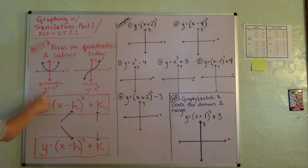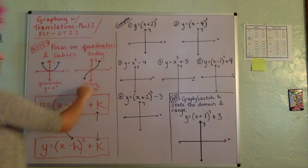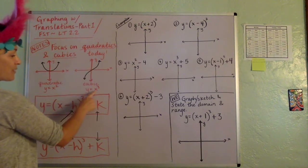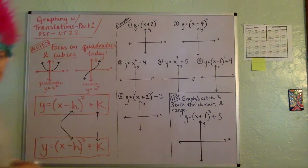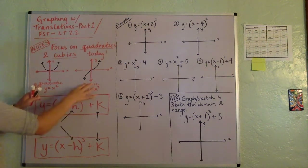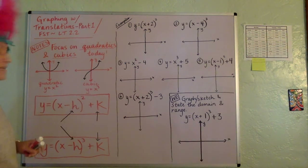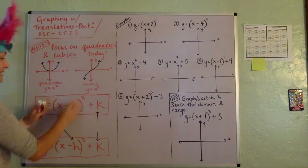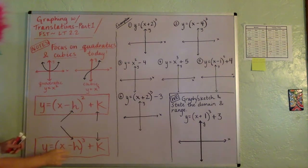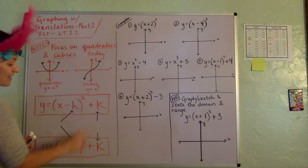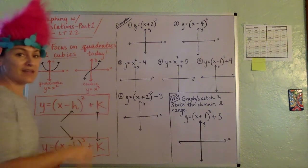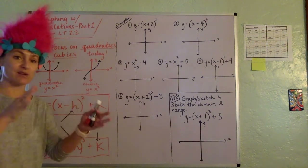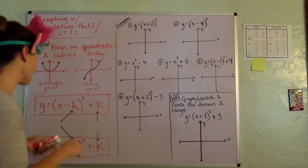Let's just remember that quadratics are your y equals x squared, and then you have your cubics — that's your y equals x to the third. So the thing we're talking about today is that these are just the parent functions, but we could throw in numbers inside of a parenthesis on either of these, and also after the exponent, a number tacked on the end that will start to adjust how the graph looks.